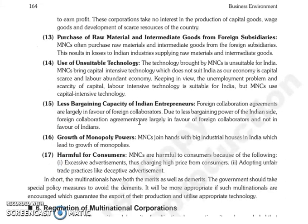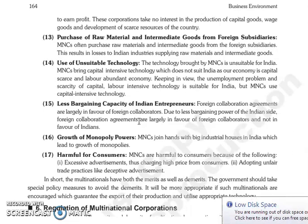The next is purchase of raw material and intermediate goods from foreign subsidiaries. Jo MNCs hain, woh purchase karti hain raw material aur intermediate goods apni foreign subsidiaries se, jis ki wajah se jo Indian industry hai jo supply karti hai raw material aur intermediate goods, unko losses hote hain.